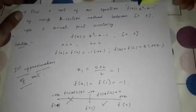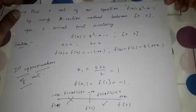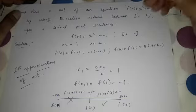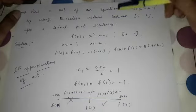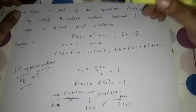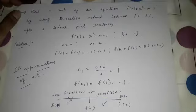The problem is: find a root of the equation f(x) = x³ - x - 1 by using the bisection method, within the interval 0 to 2, up to 2 decimal point accuracy.